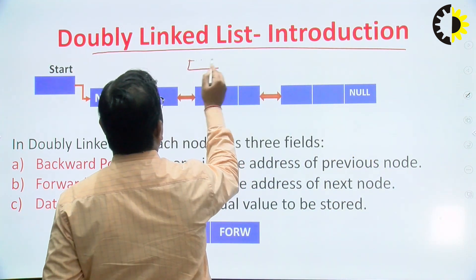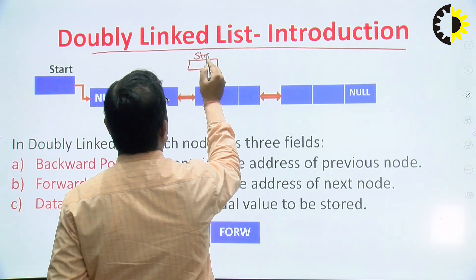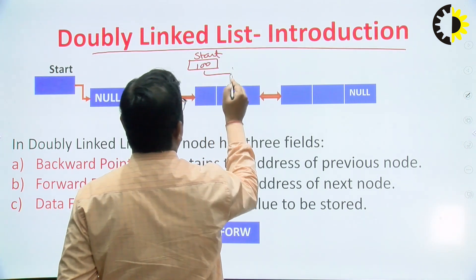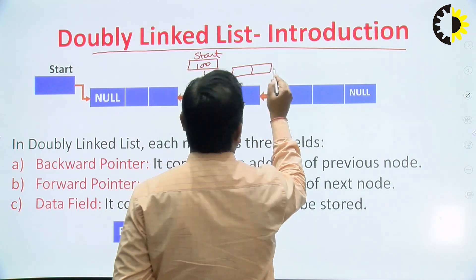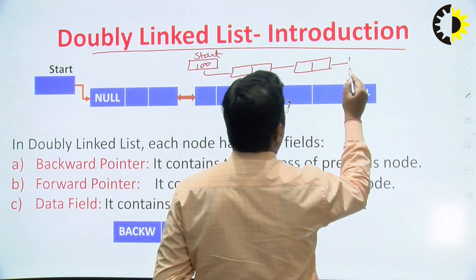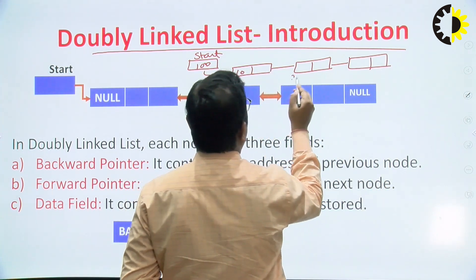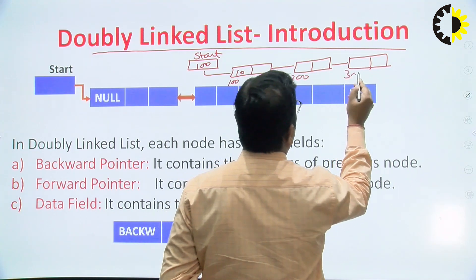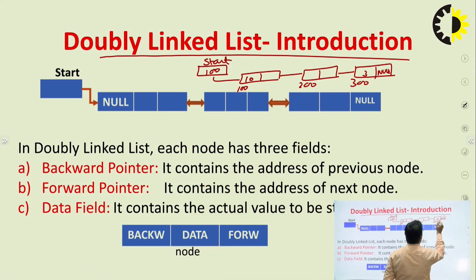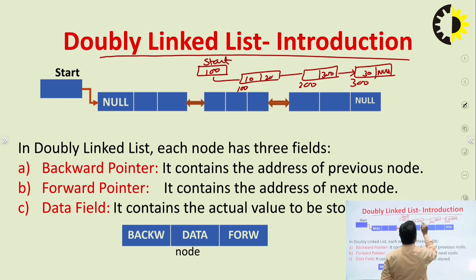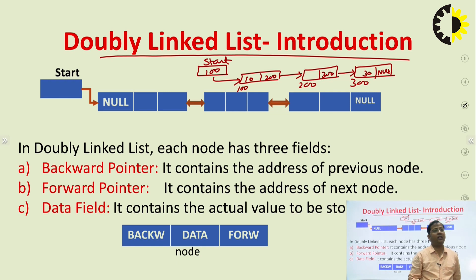Suppose we have a single linked list with a start pointer, first node, then second node. If I want to traverse in the backward direction, in that case we cannot perform traversing in the backward direction in the single linked list.